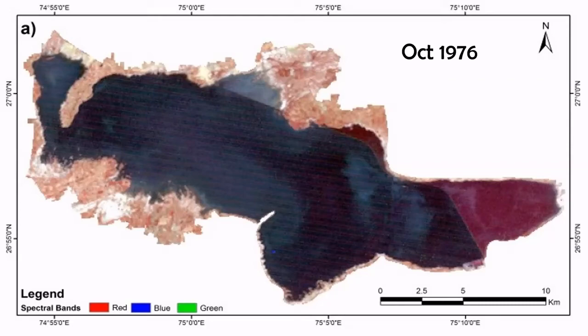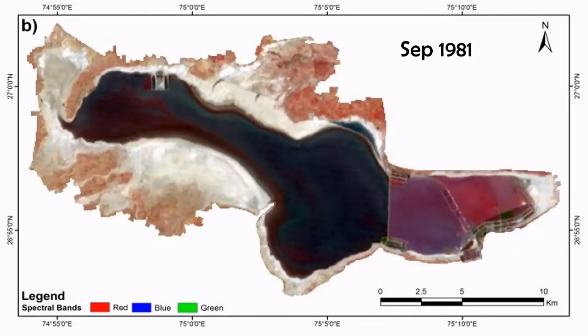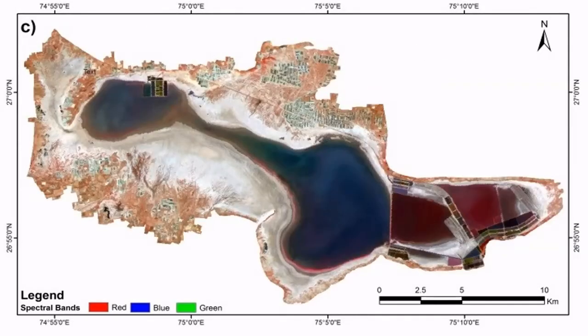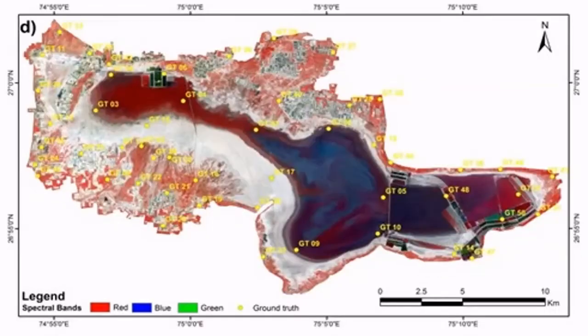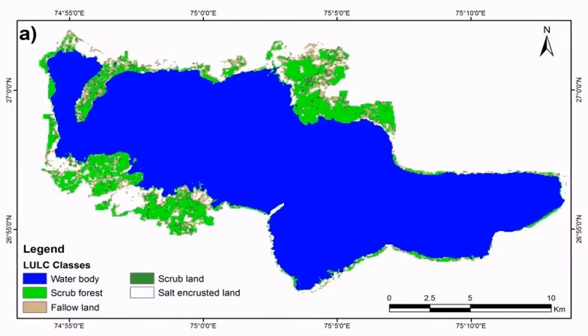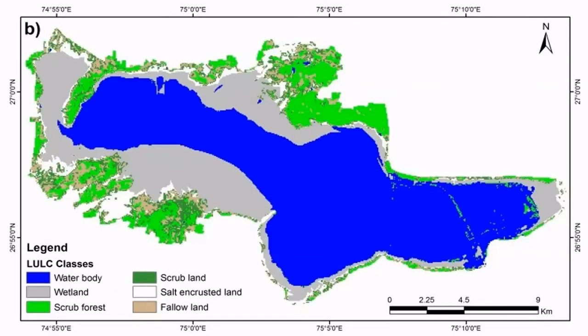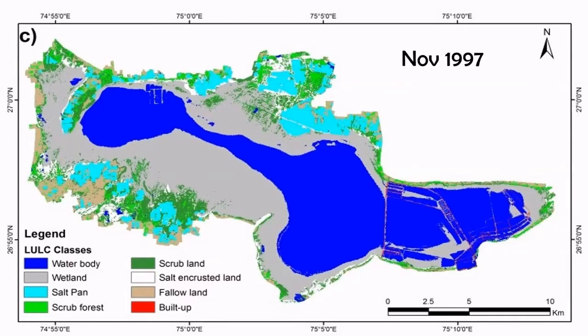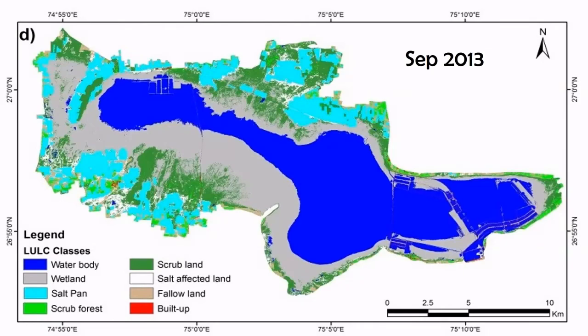The screen shows the false color composite satellite images for October 1976, September 1981, November 1997, and September 2013.